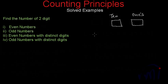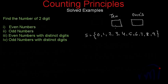These places can be filled with 0, 1, 2, 3, 8, and 9. Only one condition: 0 cannot come in the tenth place because if it comes in the tenth place it converts this number into a single-digit number. So 0 cannot come in tenth place. First we have to find the total number of even numbers made up of two digits.